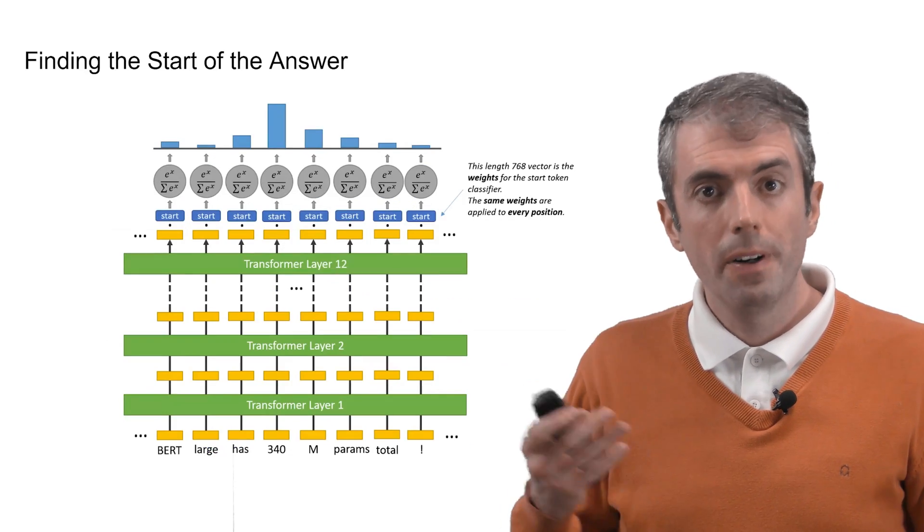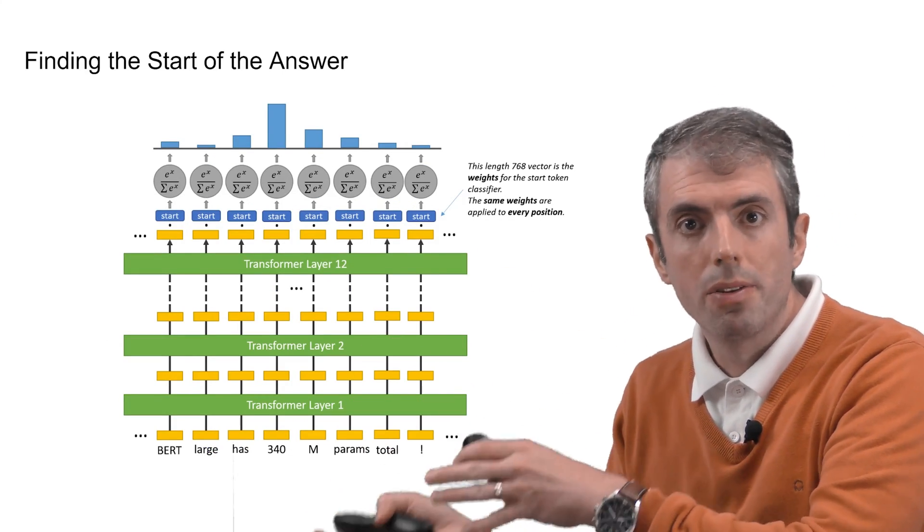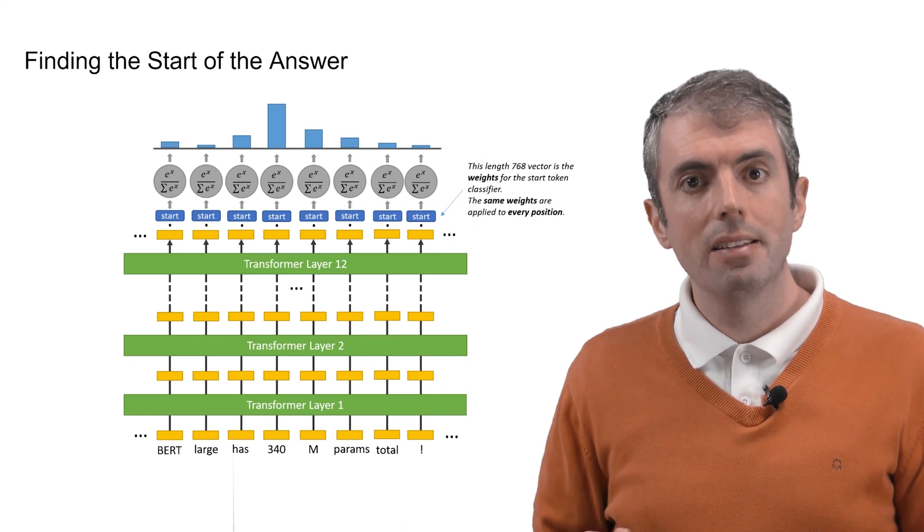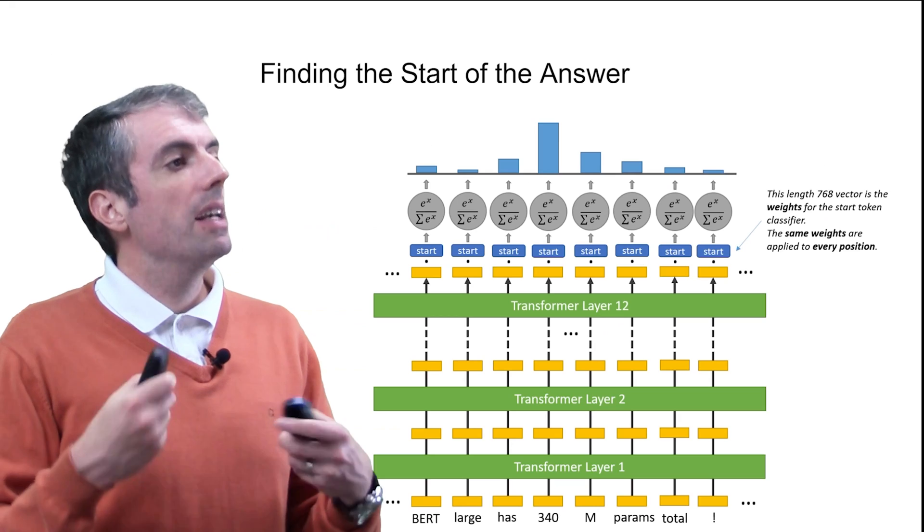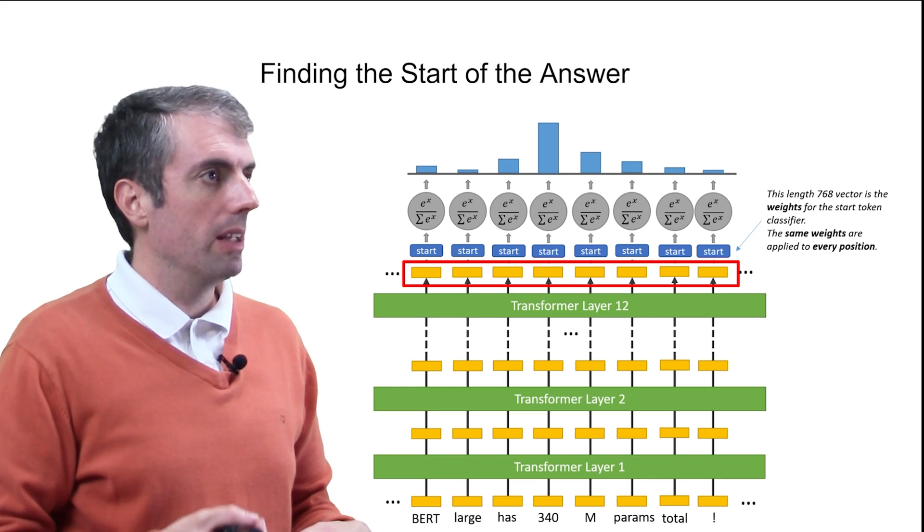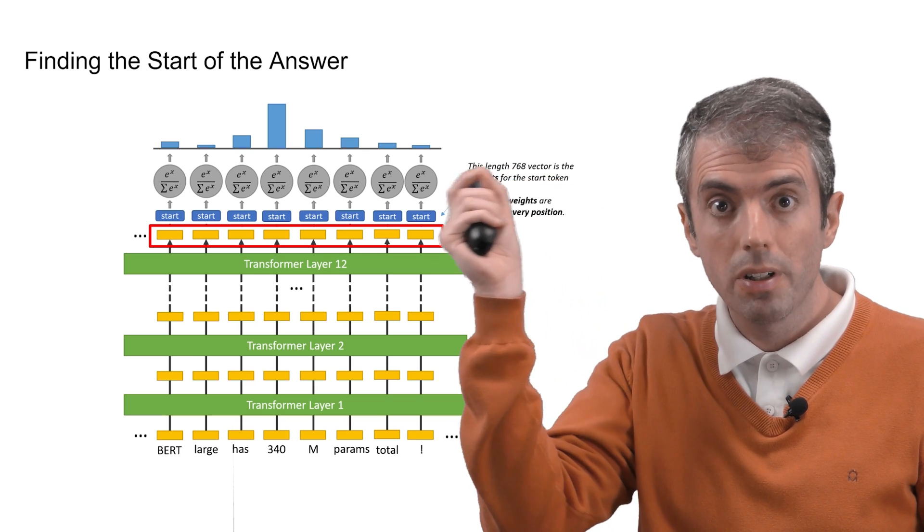So how do you do that? First, you do the usual thing and pass all of your input through each of your BERT layers. Then you build a classifier for the start and end position. The input to the classifier is the final BERT layer for each of the tokens. And you'll have a vector for each of your tokens.